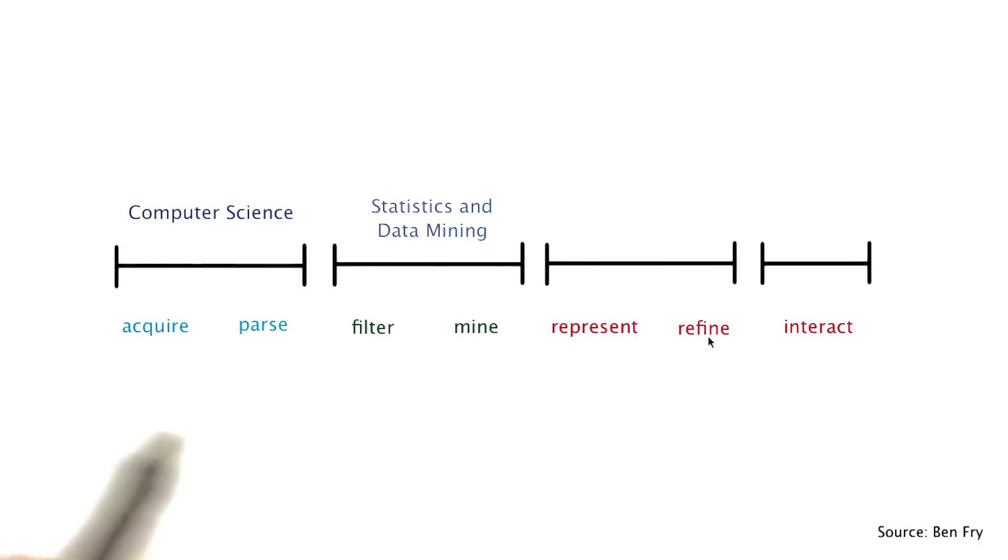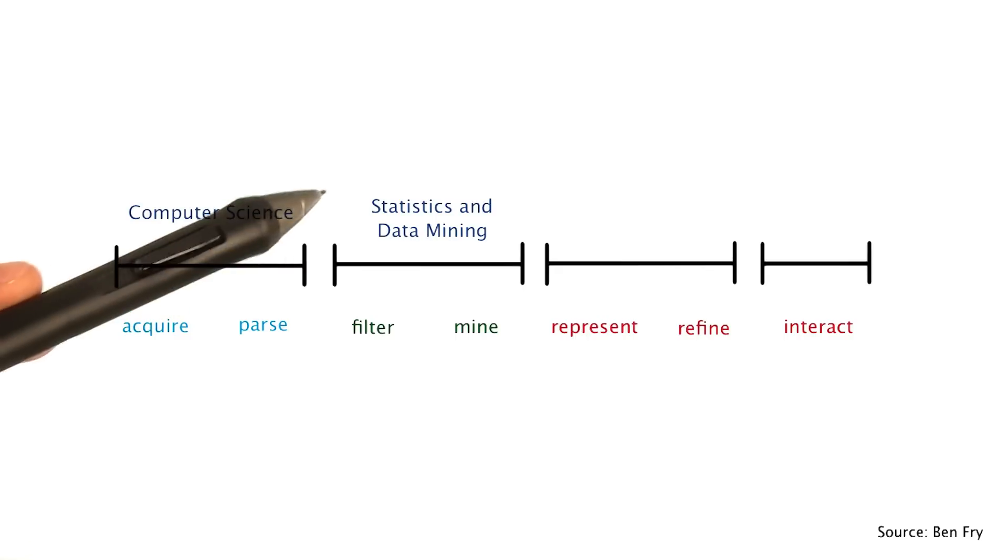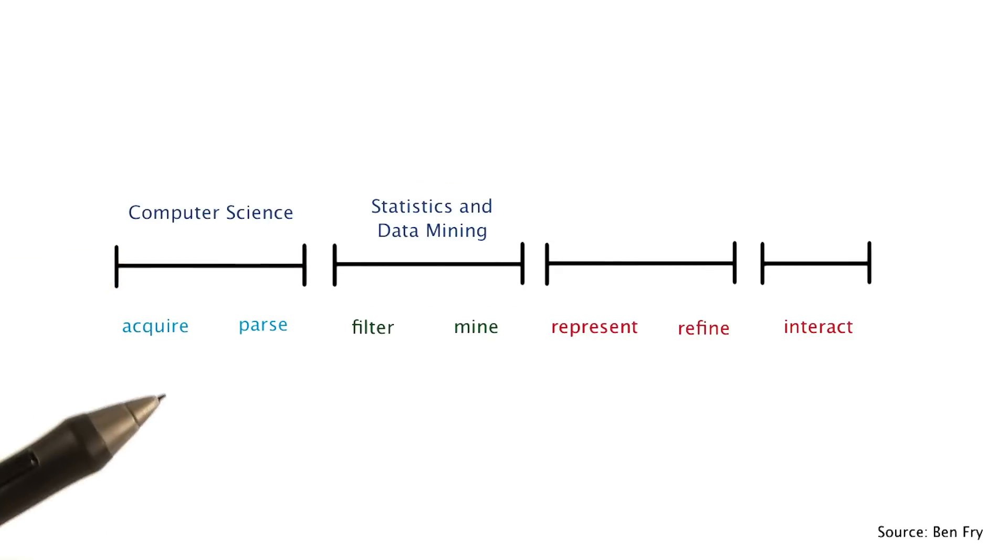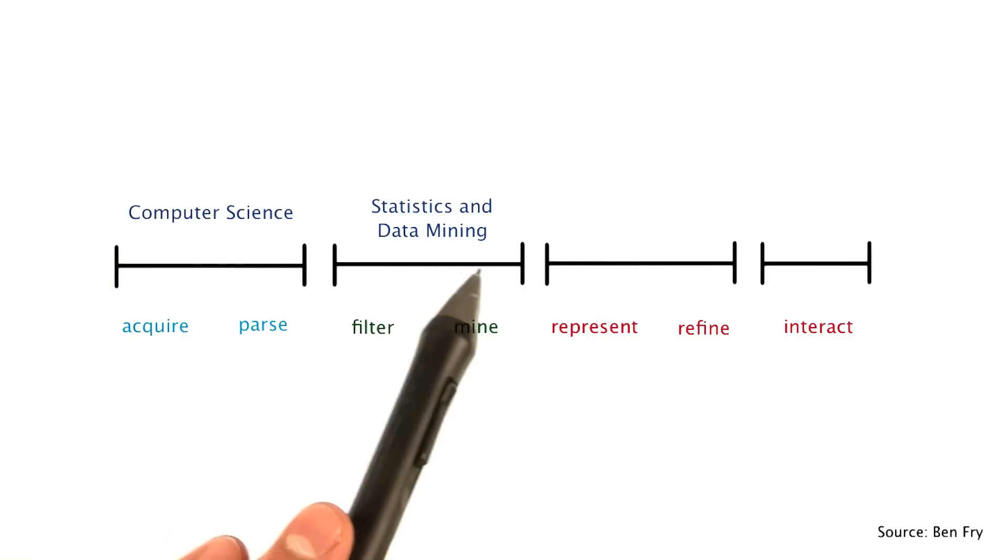The second group here of filtering and mining represents what is often most associated with data science, and many people consider the most exciting. This includes modeling, data mining, and exploratory analysis, and applying statistical and mathematical theory to discover insights. Because of this, Ben Fry labels the second stage as associated with statistics and data mining.